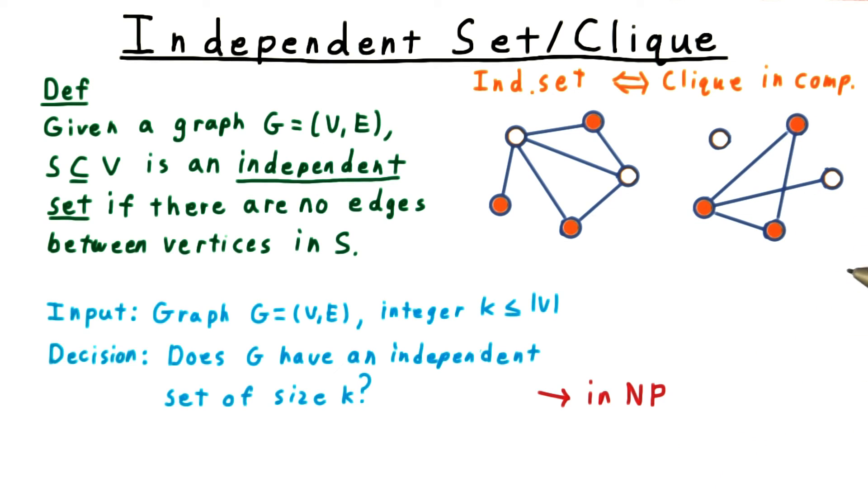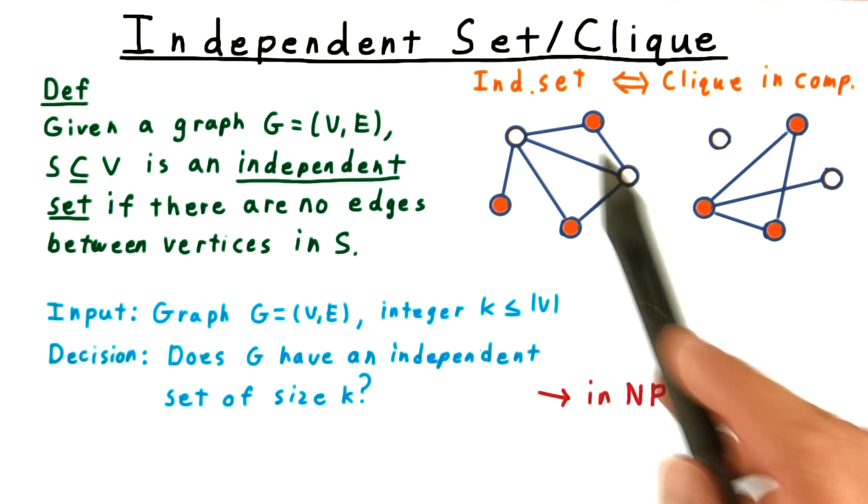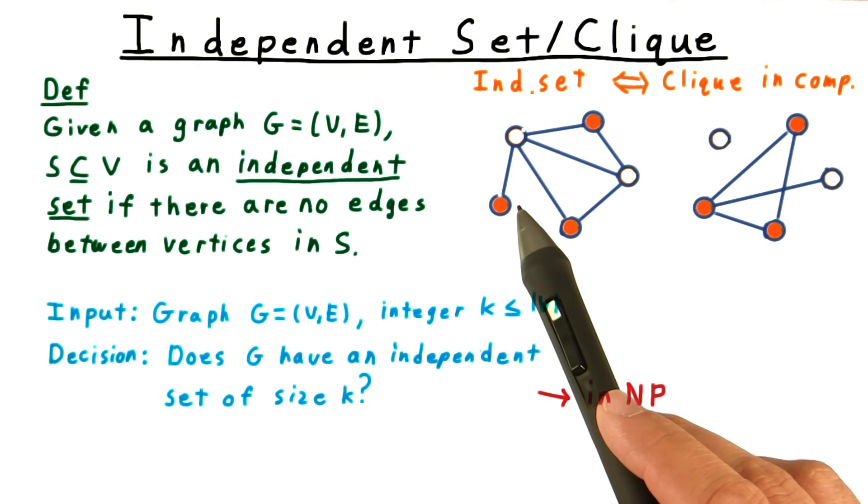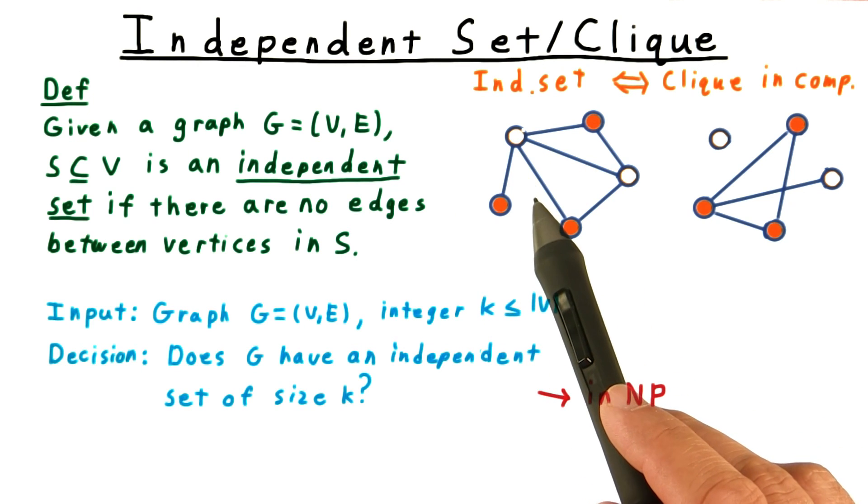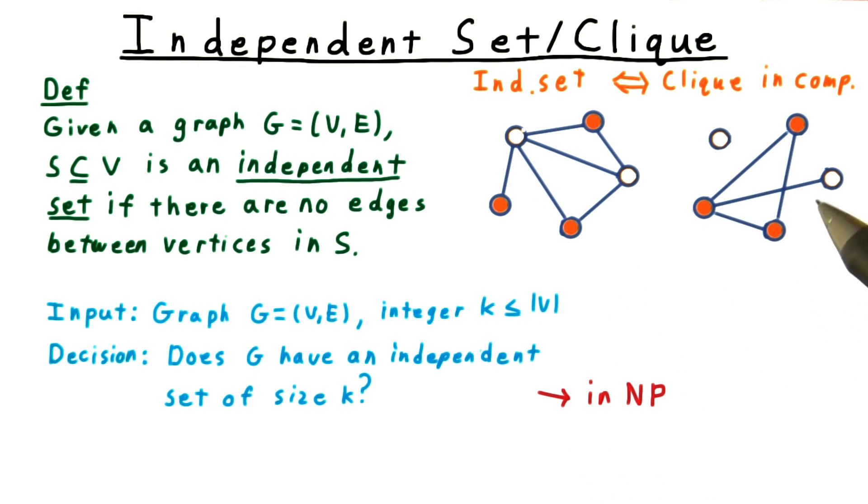By the complement graph, I mean the one where there is no edge if there was an edge between two vertices in the original, and there is an edge if there wasn't one in the original. Not having any edges between a set of vertices in the original graph is the same as having all the edges among the vertices in the complement graph.